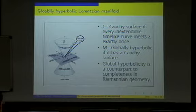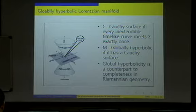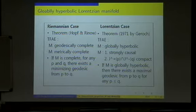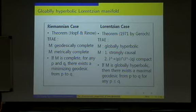Global hyperbolicity has a close relation to hyperbolic partial differential equations. Under some mild conditions, it turns out that hyperbolic partial differential equations are well-posed if the underlying manifold is globally hyperbolic. Also, global hyperbolicity is a counterpart to completeness in Riemannian geometry. In Riemannian geometry, there is the famous Hopf-Rinow theorem, which states that geodesic completeness and metric completeness are equivalent. But in Lorentzian geometry, because the metric is not positive definite, we cannot say anything about metric completeness. Also, in Lorentzian geometry, because there exist three kinds of geodesics — time-like, null, and space-like — geodesic behavior is much more difficult than in Riemannian geometry.